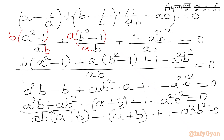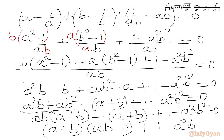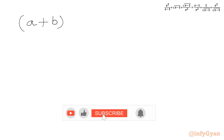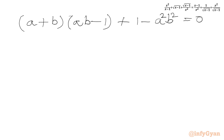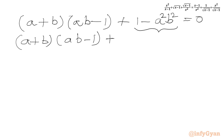From the first two terms (a + b) is common, so we write (a + b)(ab − 1) + 1 − a²b² = 0. Now we can use the difference of two squares identity: (a + b)(ab − 1) + (1 + ab)(1 − ab) = 0.